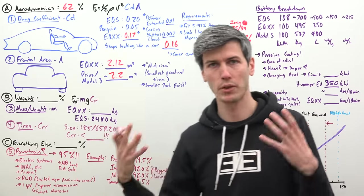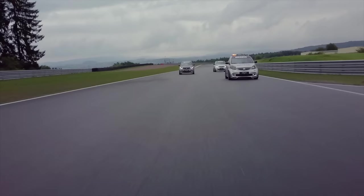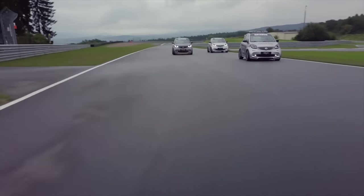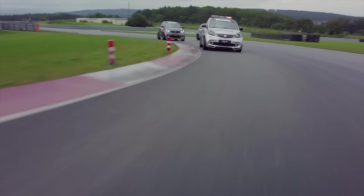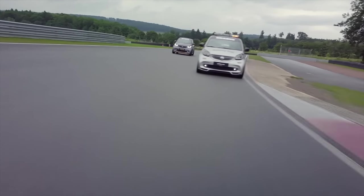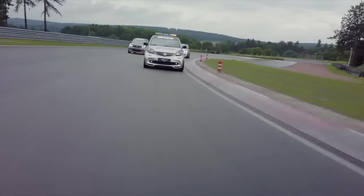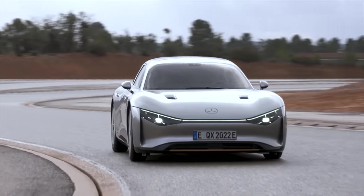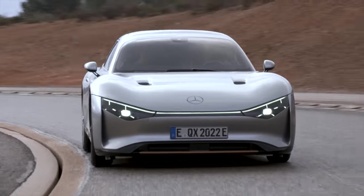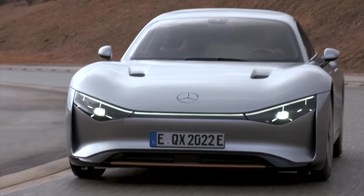There are vehicles out there with smaller frontal areas. For example the old Honda Insight or smart car. But there's a reason why all of us aren't driving smart cars. There's a practical element to having a larger sedan. They're trying to keep it within the realm of practicality with this frontal area of 2.12 meters squared.